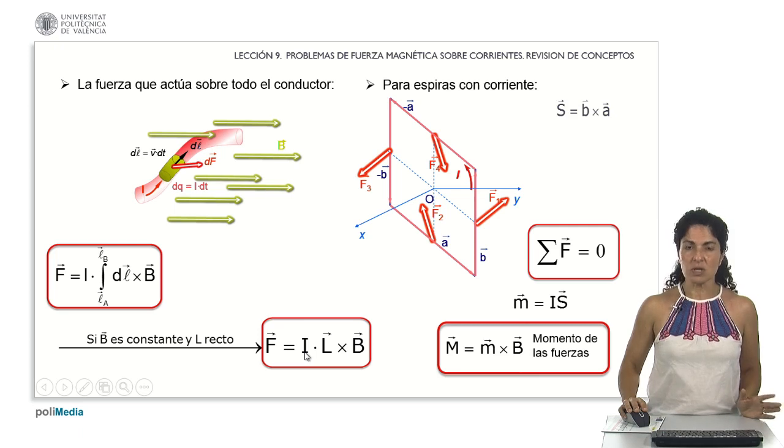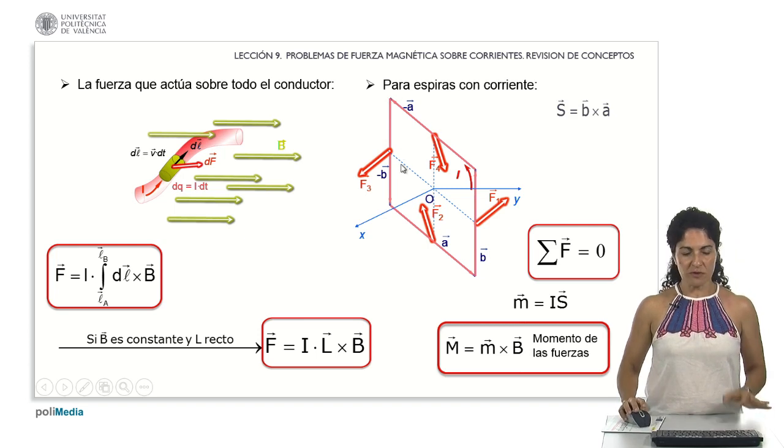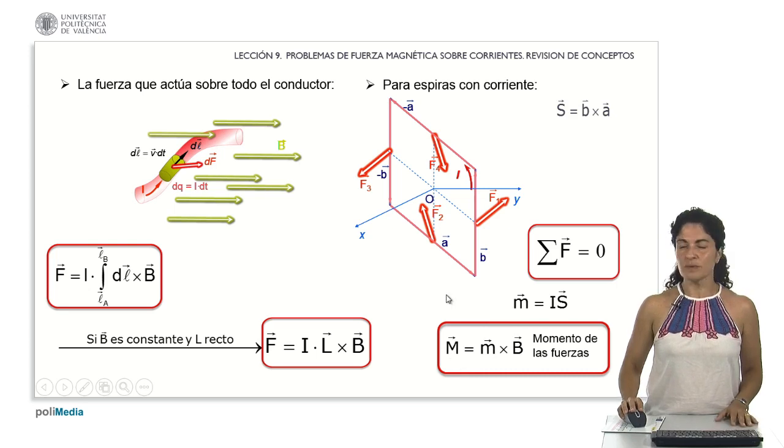If the conductor forms a closed circuit, resulting in a coil, be it a square loop or any other shape, provided it's a closed circuit, the sum of all contributions yields a total force of zero. We derive the magnetic moment by multiplying the current with the loop's surface vector and subsequently obtain the moment resulting from forces acting on the loop, calculated from the magnetic moment and the magnetic field.